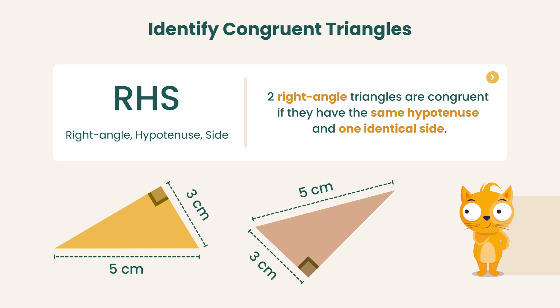Using Pythagoras' theorem, we can be sure that the third side is also equal in length. This leads us to the SSS case, which confirms that the two triangles are congruent.